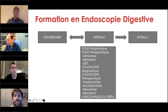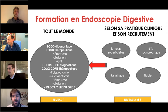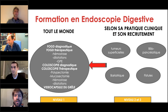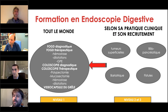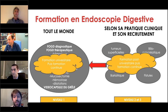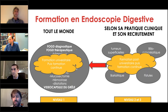On voit bien la différence entre les techniques de niveau 1 et niveau 2. Tout le monde doit se former et être autonome en endoscopie de niveau 1. Par contre, selon sa pratique clinique et son recrutement, on peut avoir besoin de formations post-universitaires plus ciblées : traitements de tumeurs superficielles, maladies bilio-pancréatiques, complications post-chirurgicales, chirurgie bariatrique. Le niveau 1 évolue avec le temps, les pratiques et les technologies — c'est cela l'importance de la formation continue.